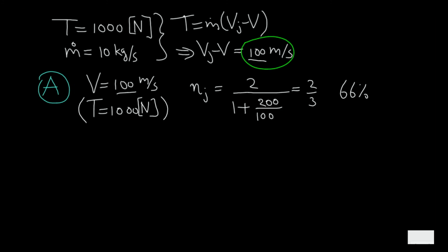Now let's take another situation B where everything is the same, but now we have an aircraft which is flying at 200 meters per second and it is still delivering 1000 N of thrust by accelerating the same amount of air. So from this we can derive that our jet velocity has to be 100 meters per second larger, so it should be 300 meters per second now.